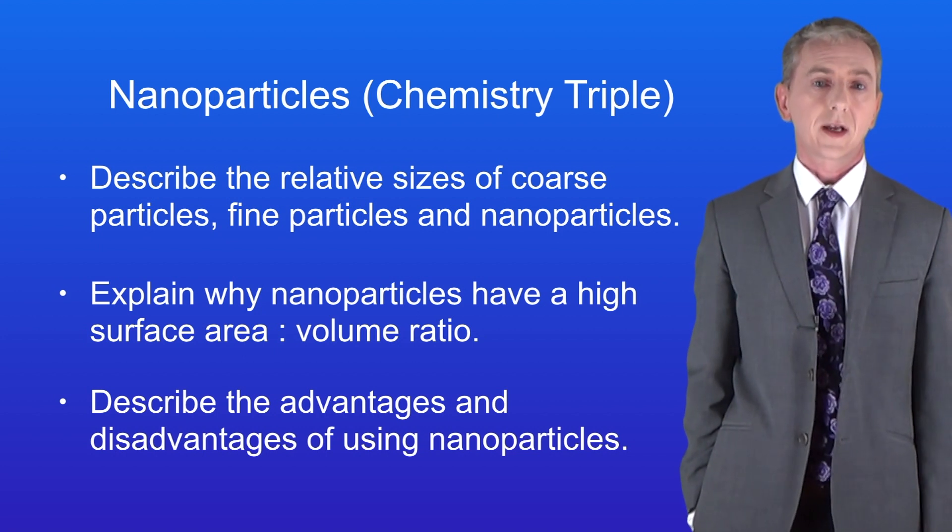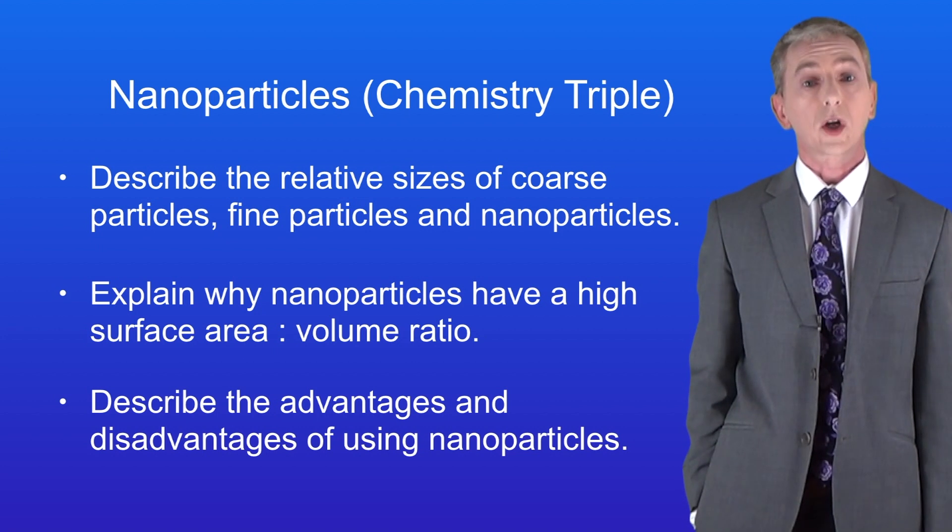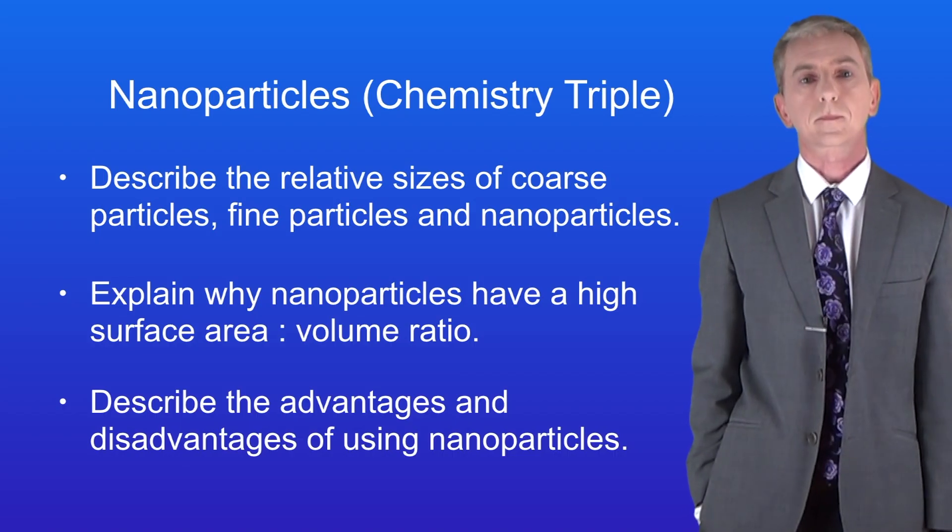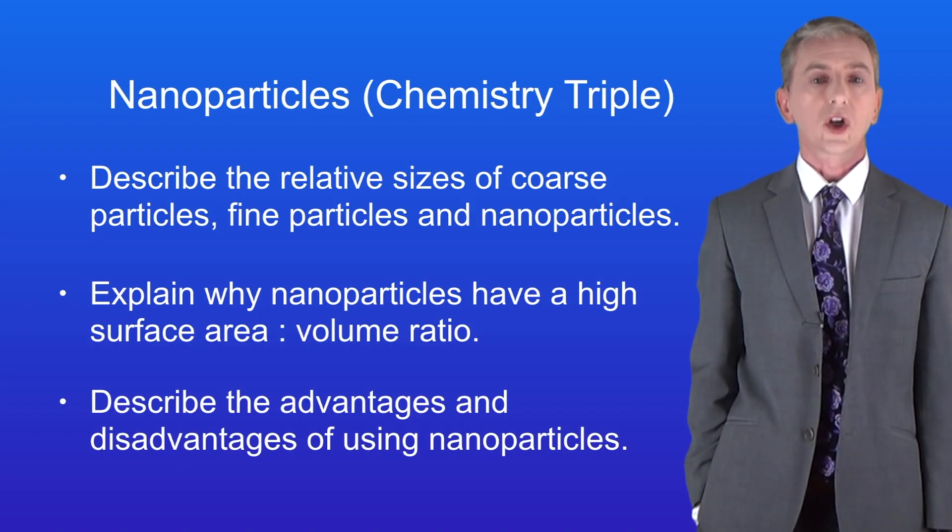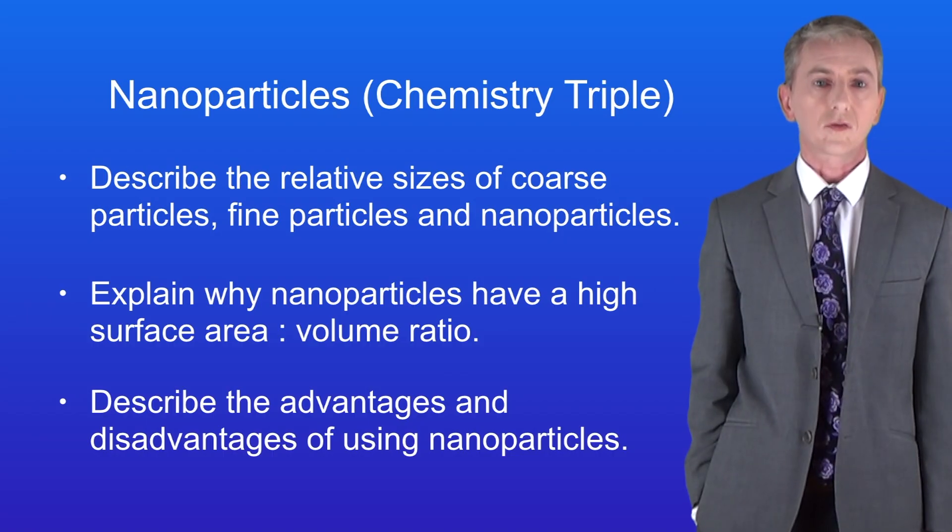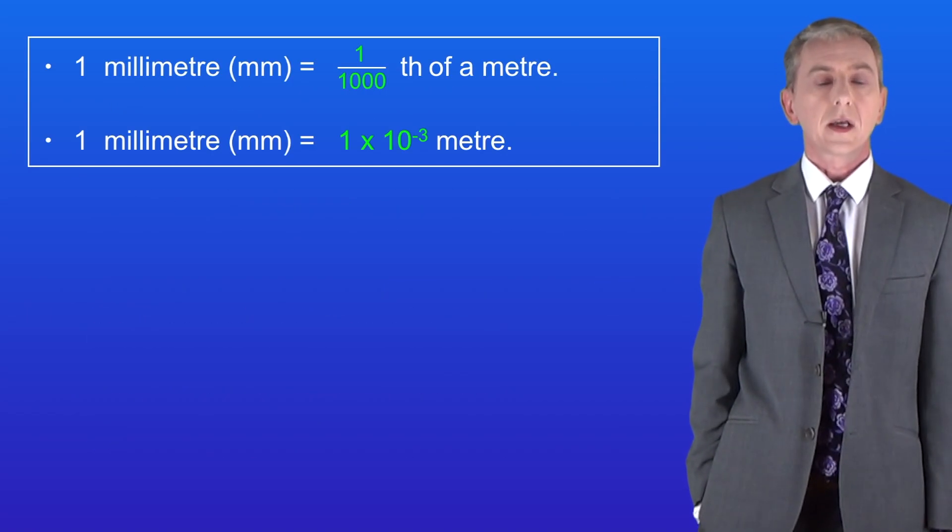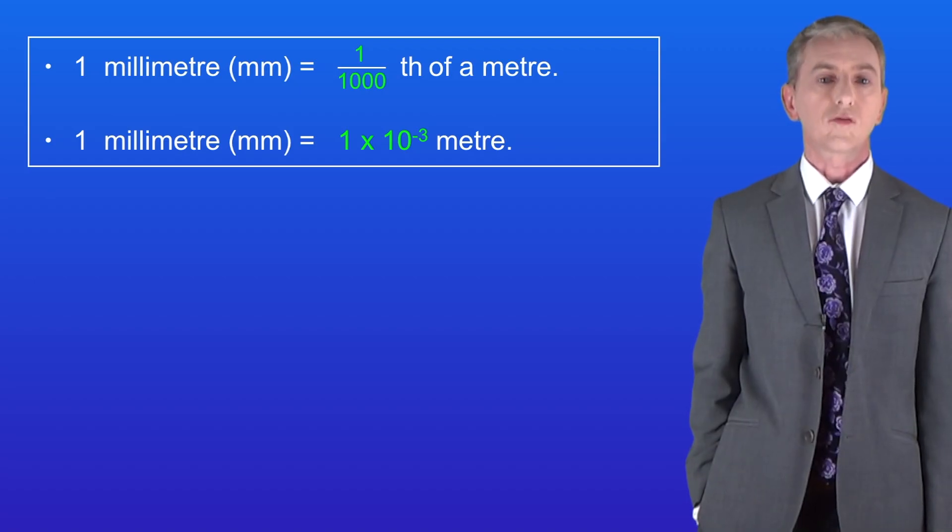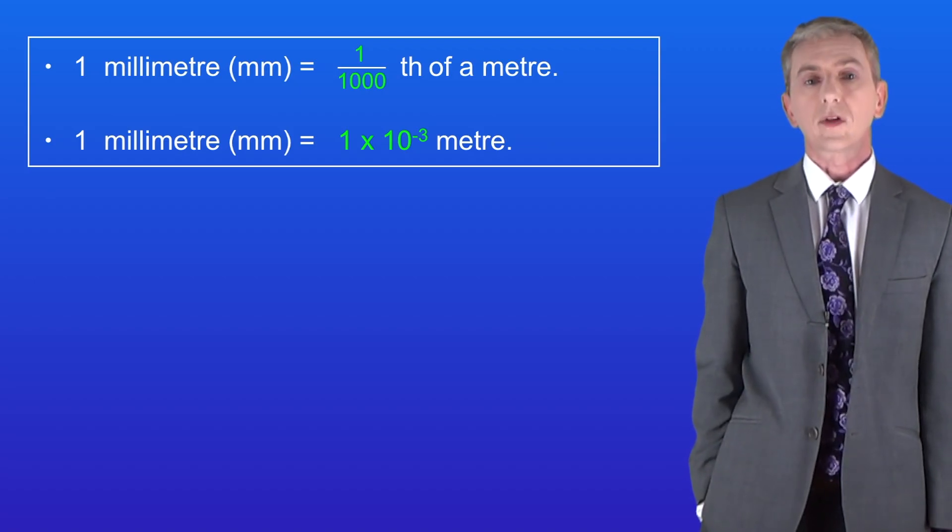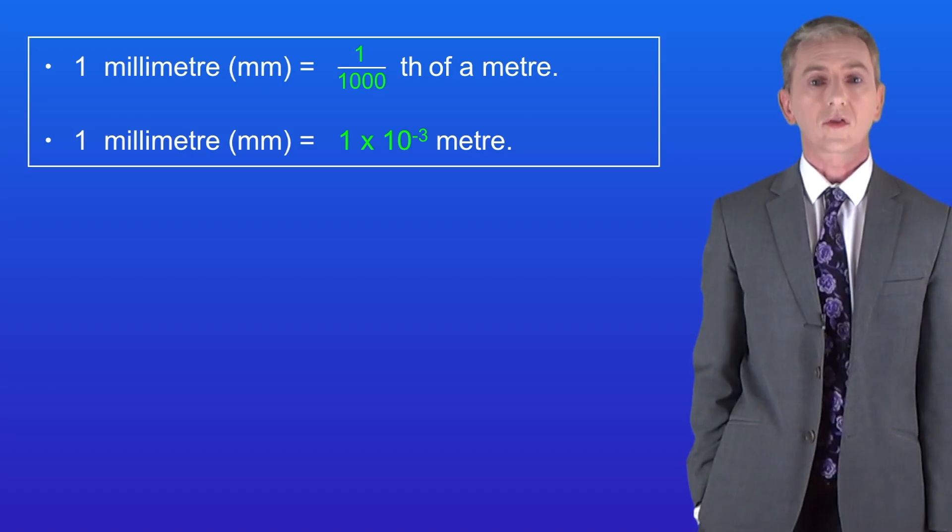Now we're going to be covering some quite challenging ideas here so you might need to watch this video a couple of times until you're confident. Okay we're going to start by looking at the idea of sizes in chemistry. Now we're used to using millimeters in science and a millimeter is one thousandth of a meter. If we're using standard form then we would say that a millimeter is one times ten to the power of minus three meters. In chemistry a millimeter is actually a very large size.